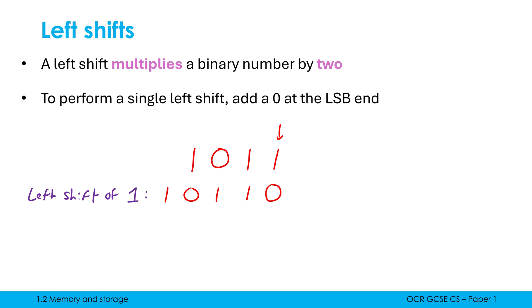If we convert both numbers to denary, we can see this effect in action. The top number is 11, the bottom is 22. We can see it's multiplied by 2, it's doubled. If I apply a second left shift, I now have two zeros on the right hand side. This number is now 44. So a left shift multiplies by 2.